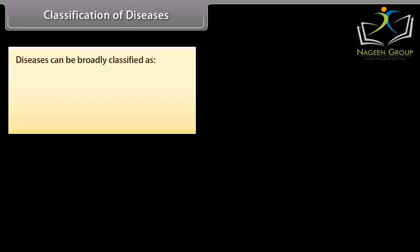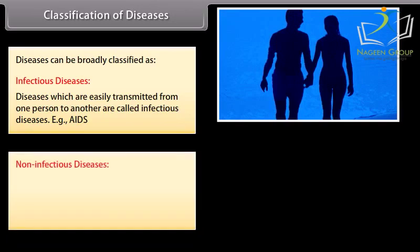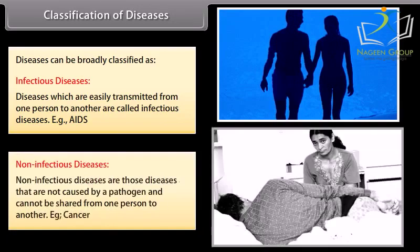Classification of diseases. Diseases can be broadly classified as infectious diseases, which are easily transmitted from one person to another, for example AIDS, and non-infectious diseases, which are not caused by pathogens and cannot be shared from one person to another, for example cancer.